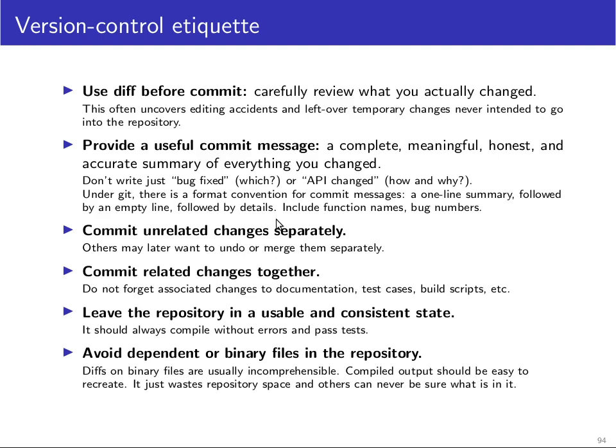Try not to commit unrelated things in the same commit, because someone may later want to undo or merge one change separately. For example, fixing a spelling mistake and adding a new command line option should be two separate commits, since someone may want to remove the new option but keep the spelling fixes. Conversely, if you add a new command line option, also update the documentation, test cases, and build scripts in the same commit — everything related to that one change in one single commit.